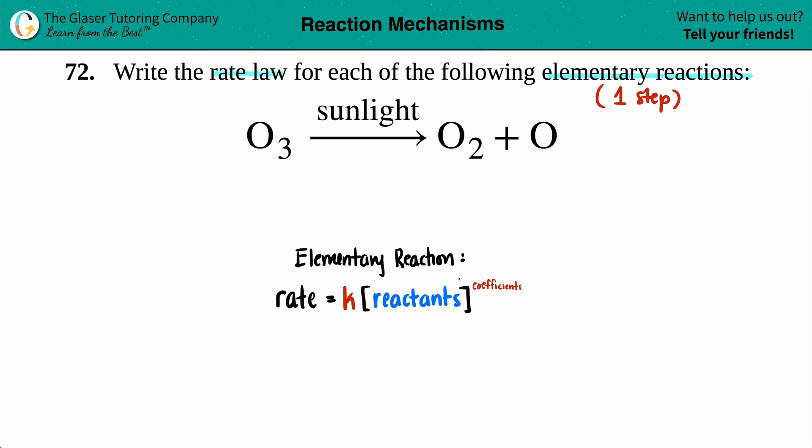Generally, rate laws don't look like the overall reaction because there are hidden steps inside of an overall reaction. But if they're saying that it's elementary, it's this one single step - that's all you got.